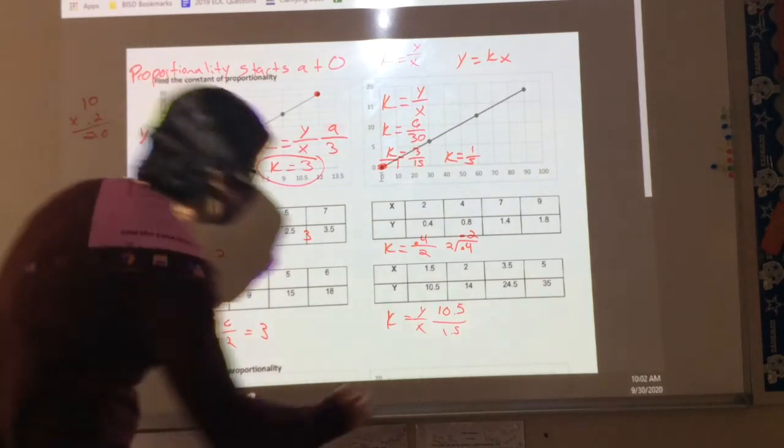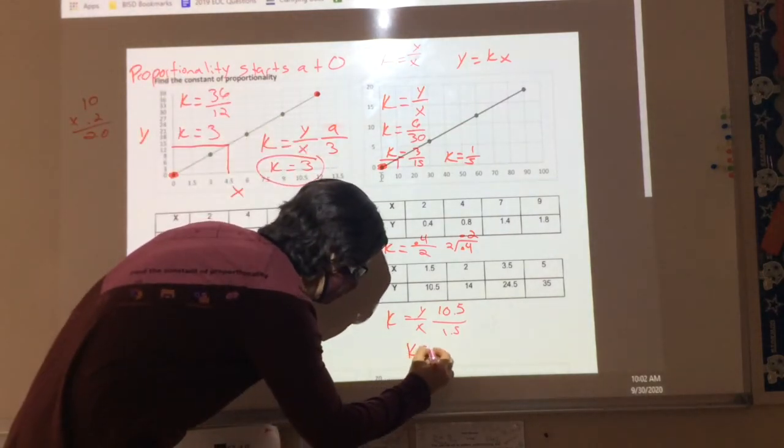Reed, what'd you get? 7. Do we agree that K is equal to 7? Oh, that's a good idea. Yeah.